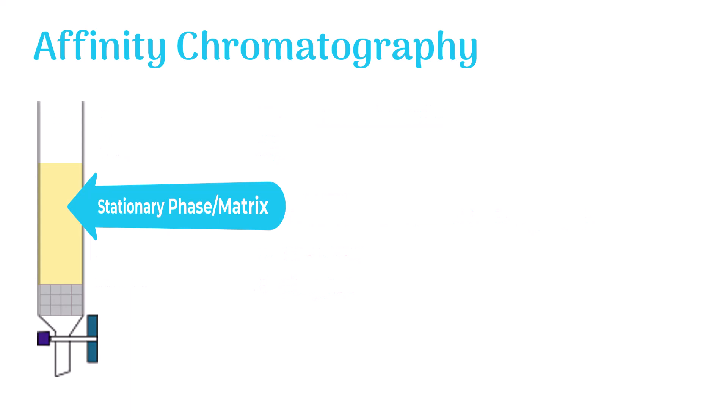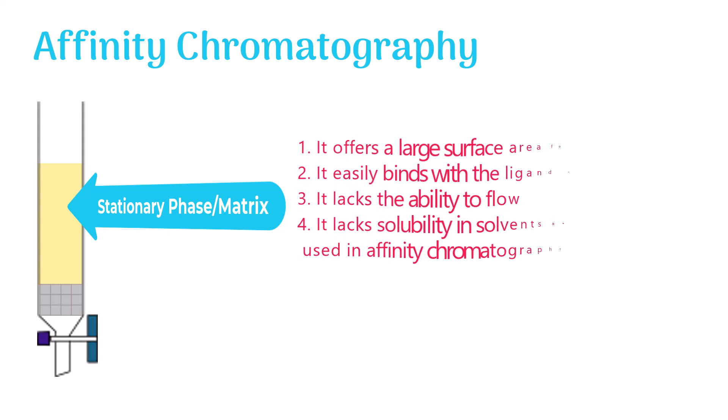The matrix in affinity chromatography possesses the following properties to become stable: It offers a large surface area for attachment. It easily binds with the ligand molecules. It lacks the ability to flow. It lacks solubility in solvents and buffers used in affinity chromatography.